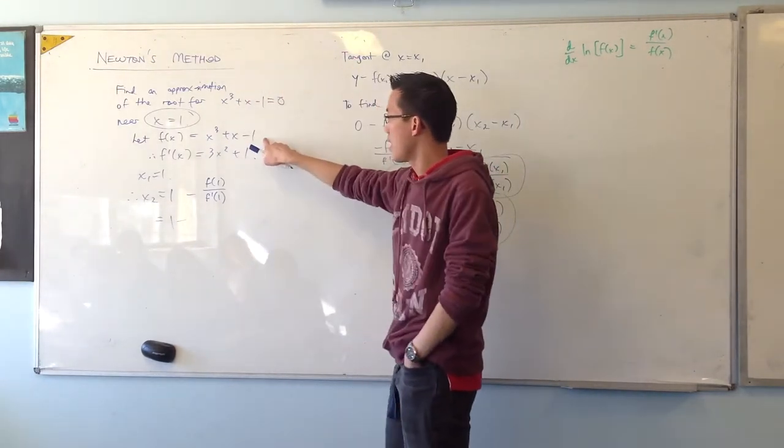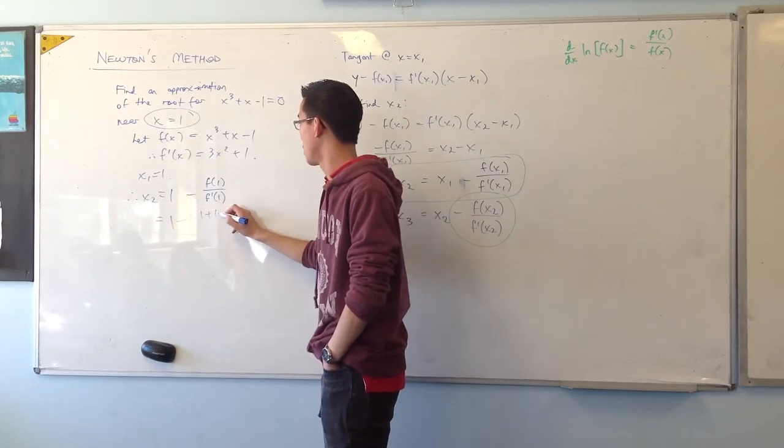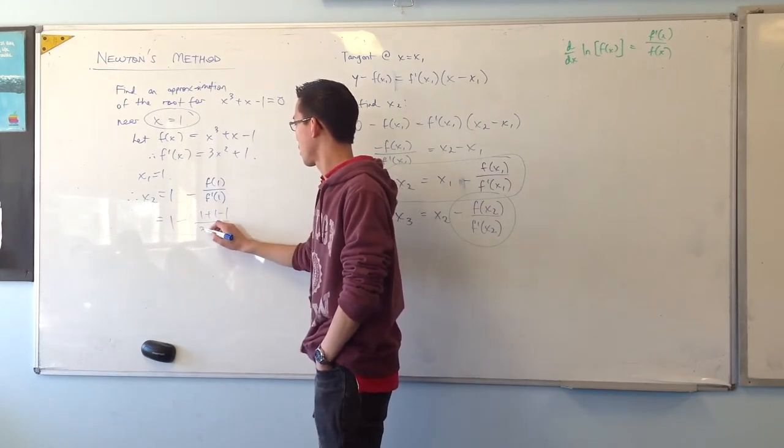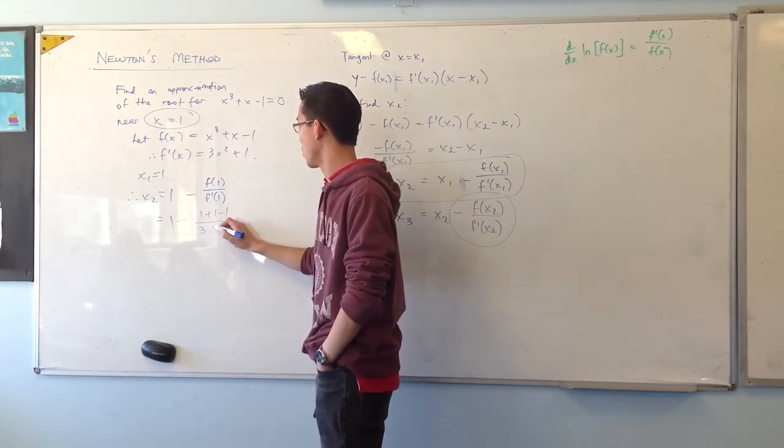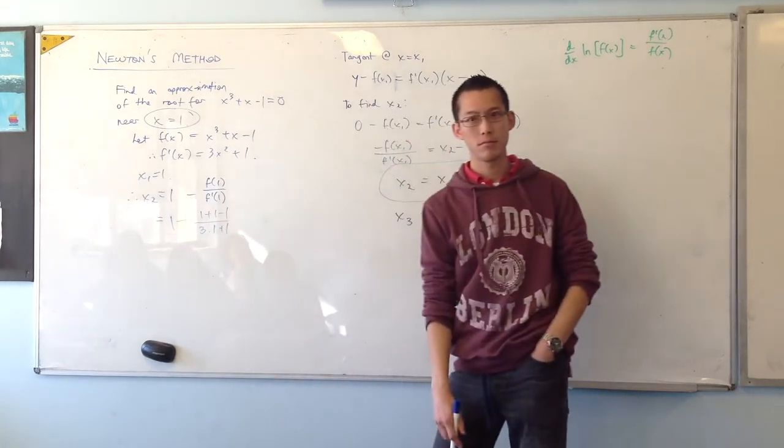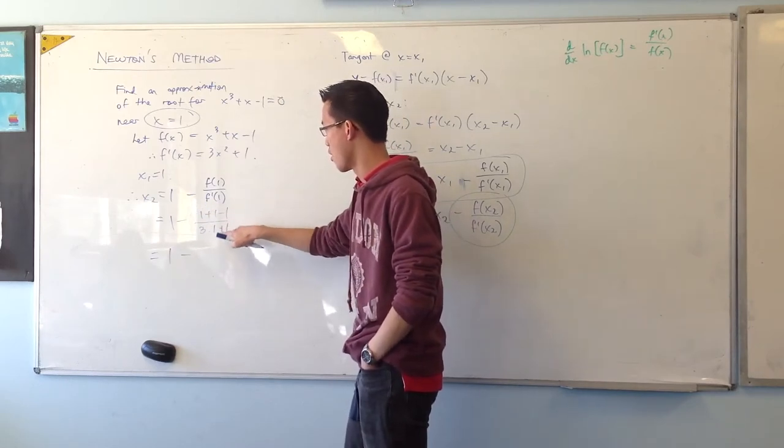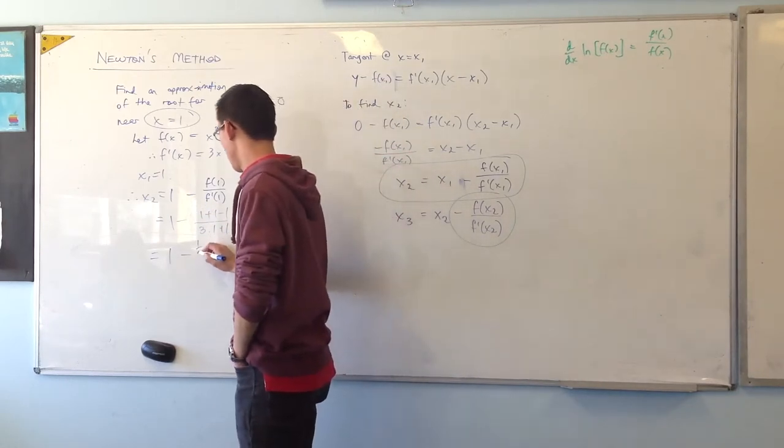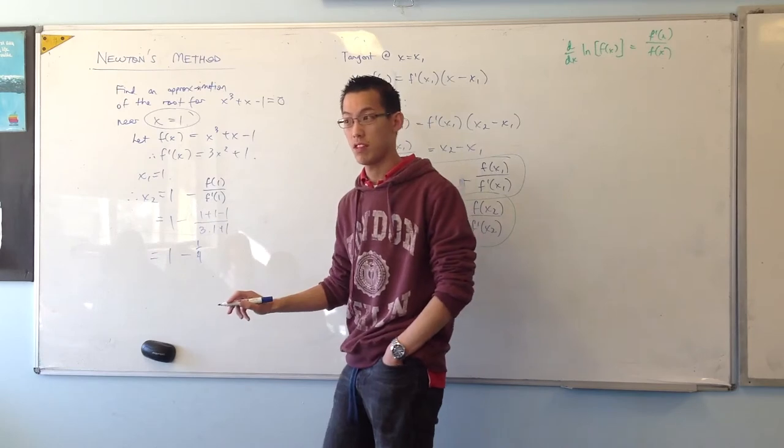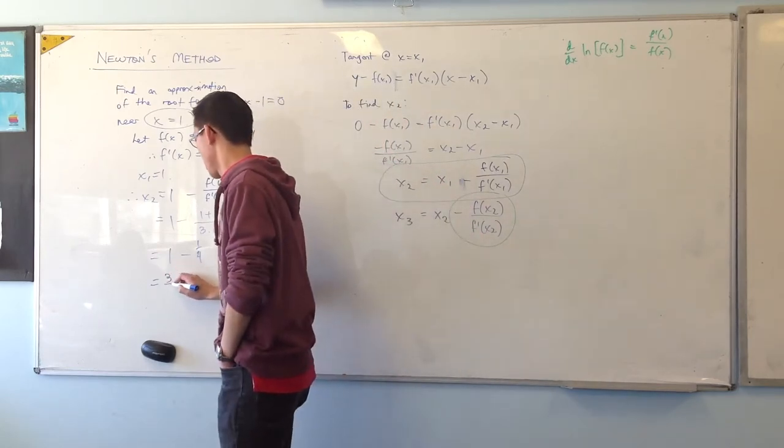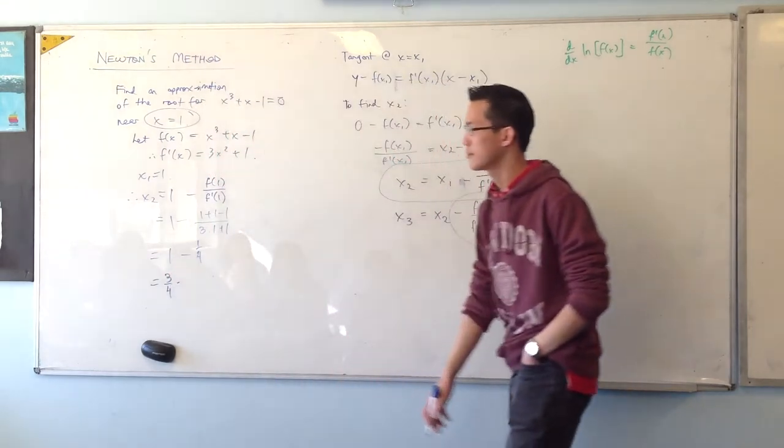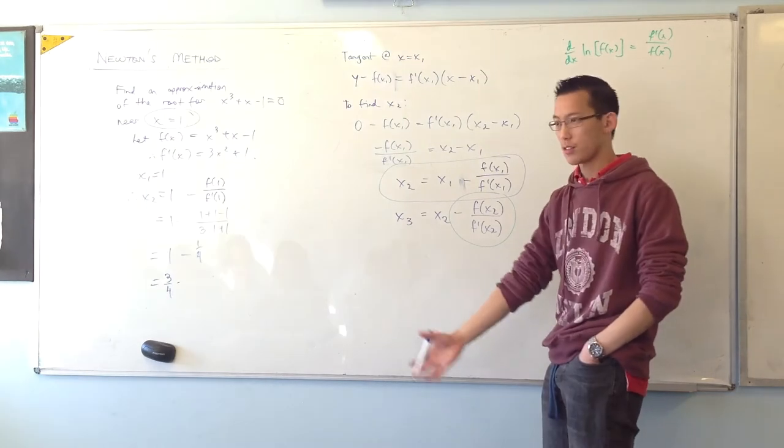1 minus, there's f, so 1 plus 1 minus 1 on 3 times 1 plus 1. Is that right? So I've got 1 minus 1 over 4. Is that right? Yeah, 3 quarters. Okay, so that's alright, that's good.